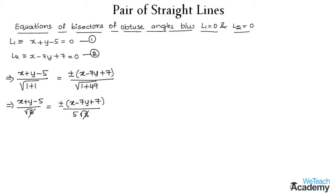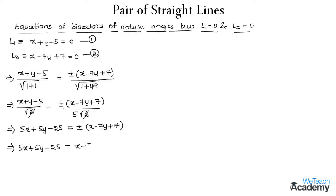The root(2) terms cancel, and transferring 5 to the other side gives: 5x + 5y − 25 equal to plus or minus (x − 7y + 7). Taking the positive condition: 5x + 5y − 25 = x − 7y + 7. Rearranging: 5x − x = 4x, 5y + 7y = 12y, and −25 − 7 = −32. Taking 4 as common factor gives x + 3y − 8 = 0.